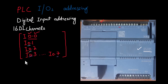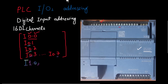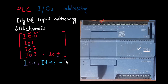So byte address 0 will accommodate eight input channels. Once we start again, we have six additional digital inputs. To refer to those additional inputs, we will start from byte 1: I1.0, I1.1, and all the way to I1.5. So six digital input channels have been addressed starting from I1.0 and ending at I1.5. This is how we refer to the digital input channels in our PLC program.